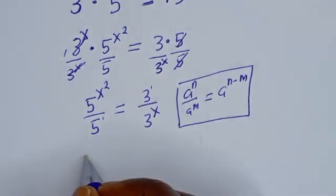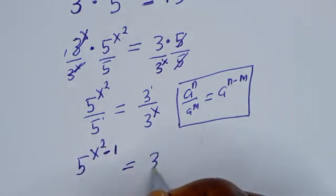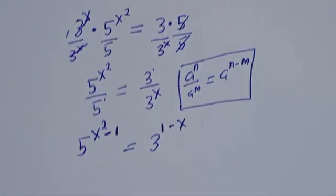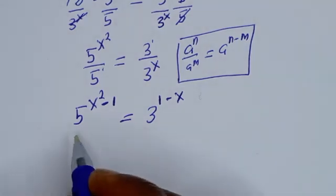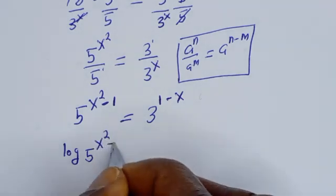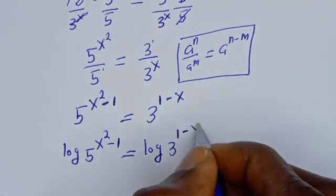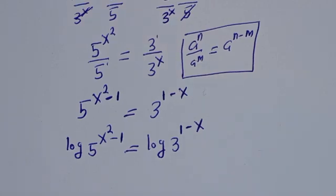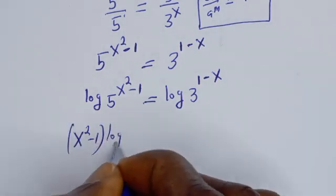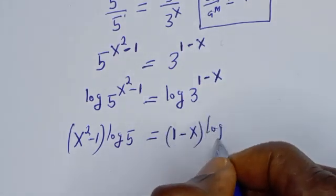This can be written as 5 to the power of (s squared − 1) is equal to 3 to the power of (1 − s). Now let's take the log of both sides: log of 5 to the power of (s squared − 1) equals log of 3 to the power of (1 − s). This gives (s squared − 1) × log 5 = (1 − s) × log 3.